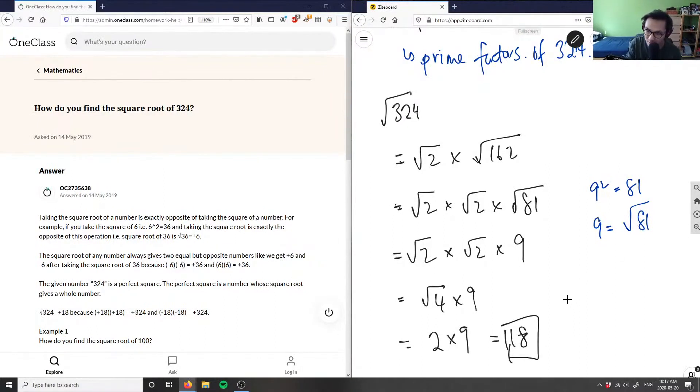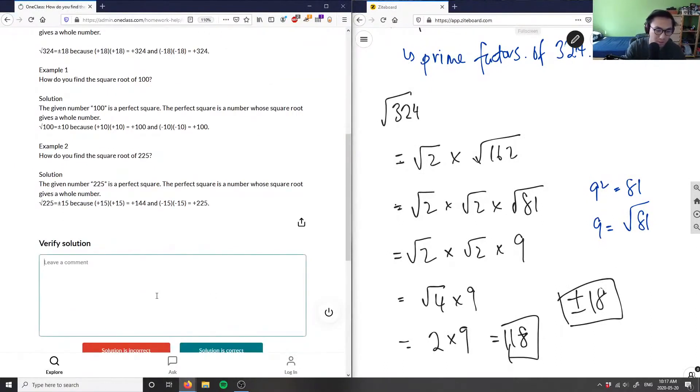If you want to be really specific, you can say this is plus or minus 18 here as the square root of 324. And as you can see, the solution is correct because you have plus or minus 18 here. So the solution is correct.